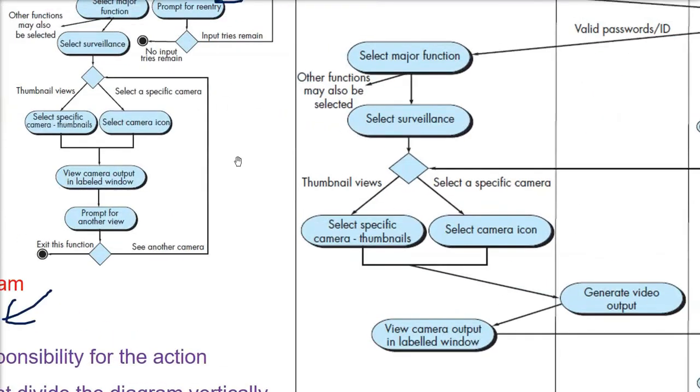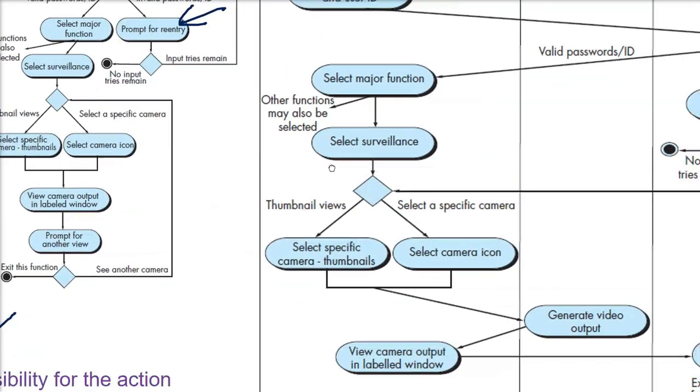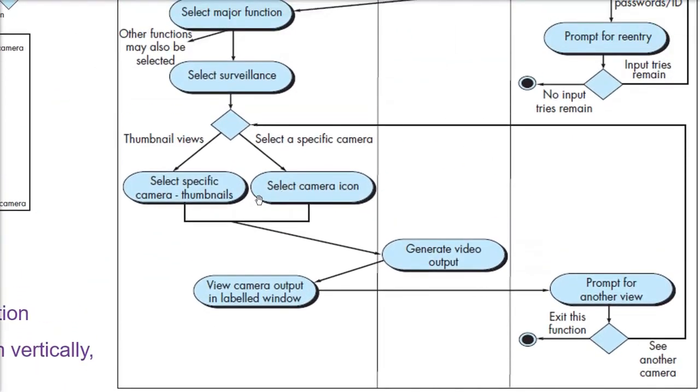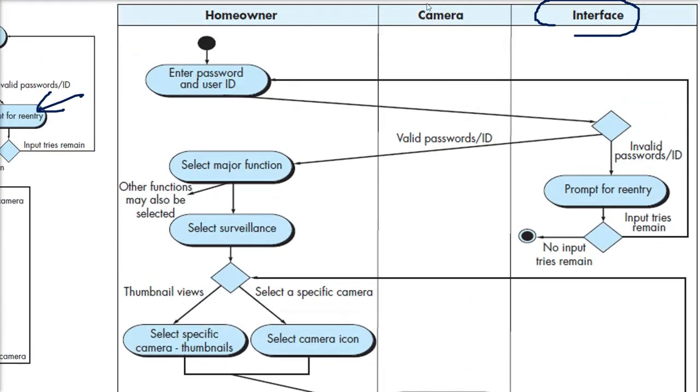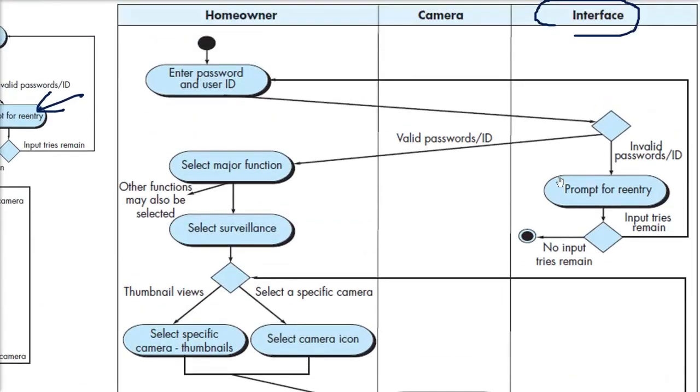So now this interface is a streamlined idea. There is one more part here, as I was just suggesting, the prompt for another view. Now when you have, if he wants to see thumbnail or a specific camera, there are parallel activities. When generating the output video is the camera activity, the camera class will take care of generating the output video. Now view camera output in labeled video. So this is the homeowner activity.